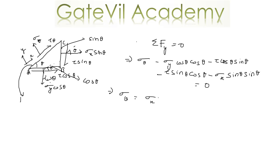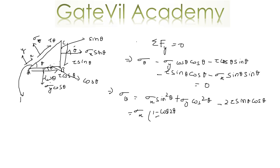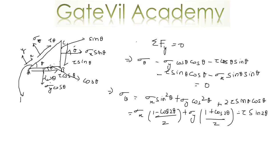Setting this equal to zero, we have Sigma theta equal to Sigma X sine squared theta plus Sigma Y cos squared theta plus 2 tau sine theta cos theta. In place of sine squared theta we write (1 minus cos 2 theta) over 2, in place of cos squared theta we write (1 plus cos 2 theta) over 2, and in place of 2 sine theta cos theta we write sine 2 theta.